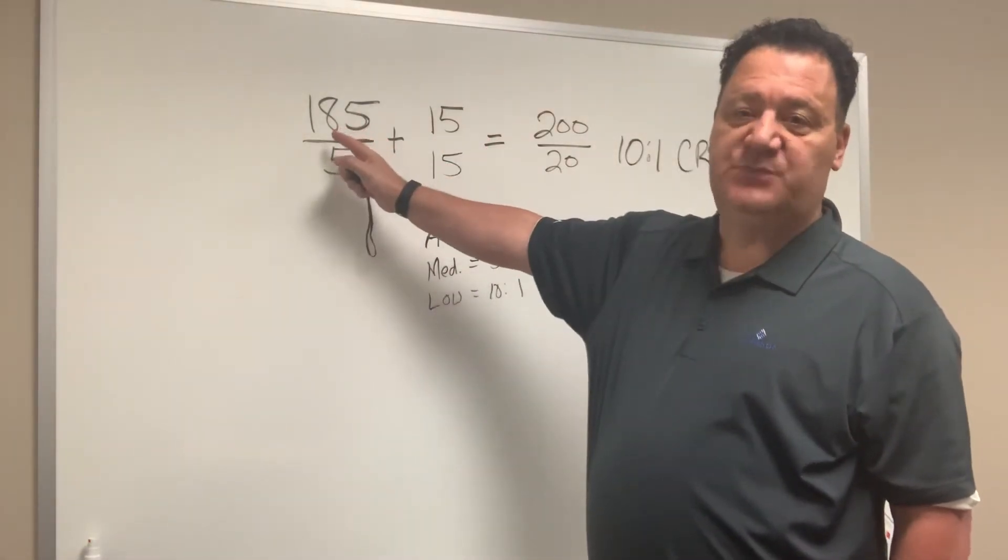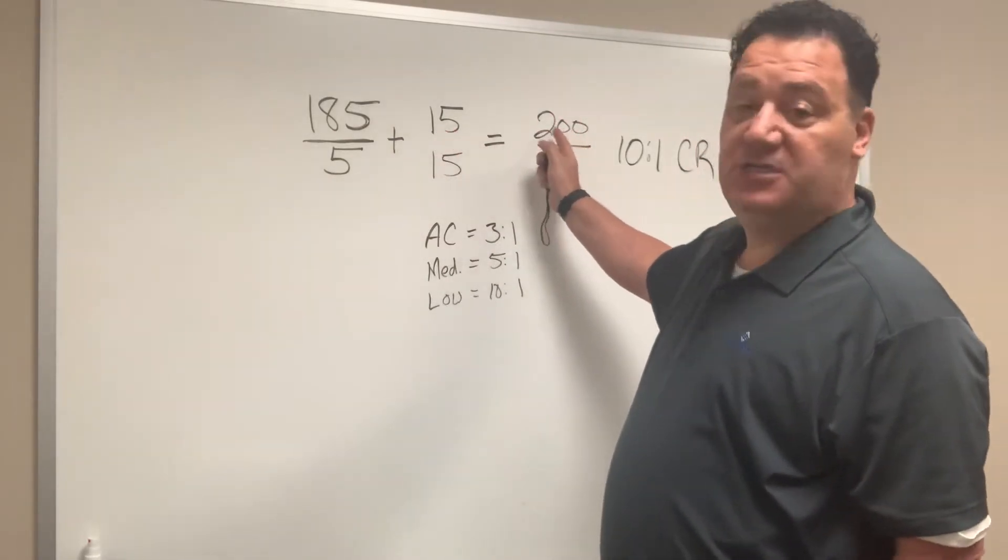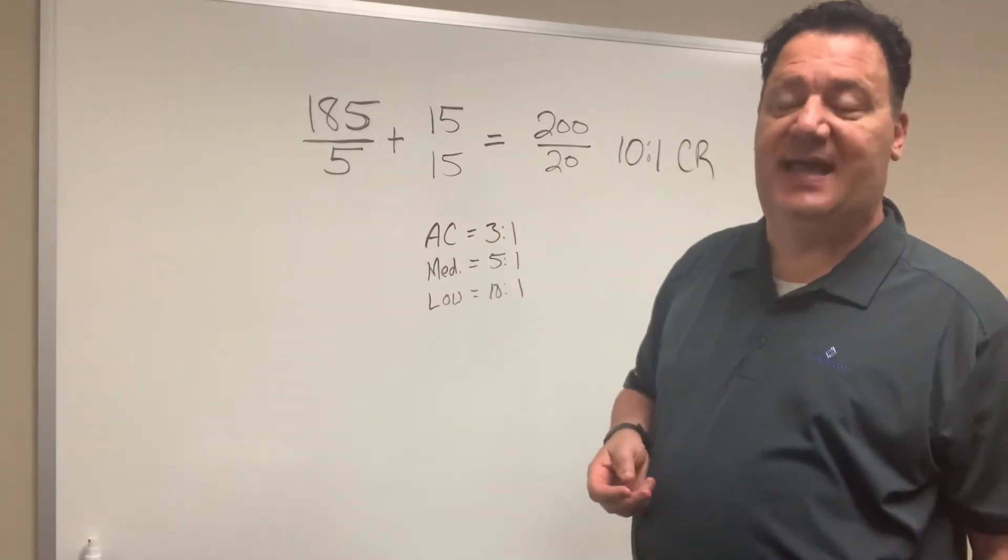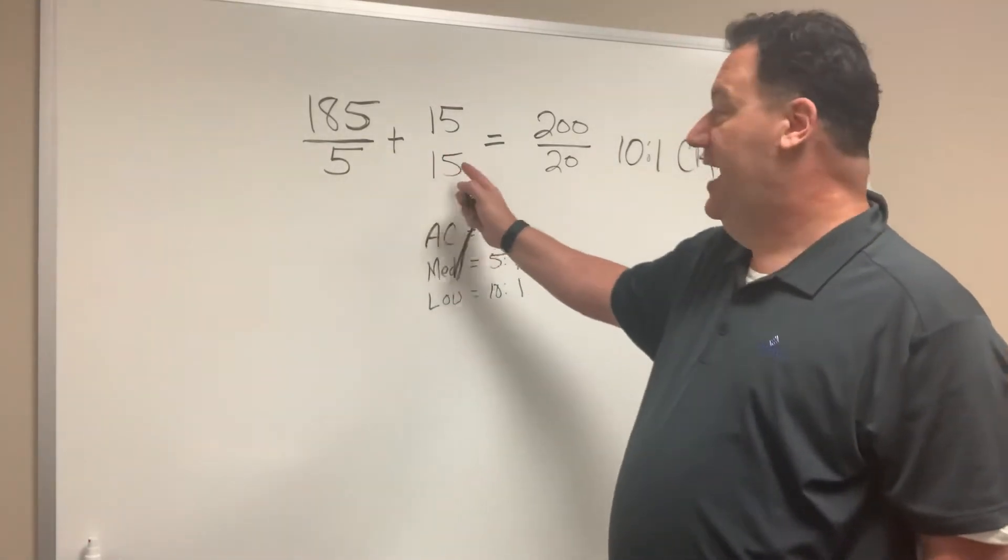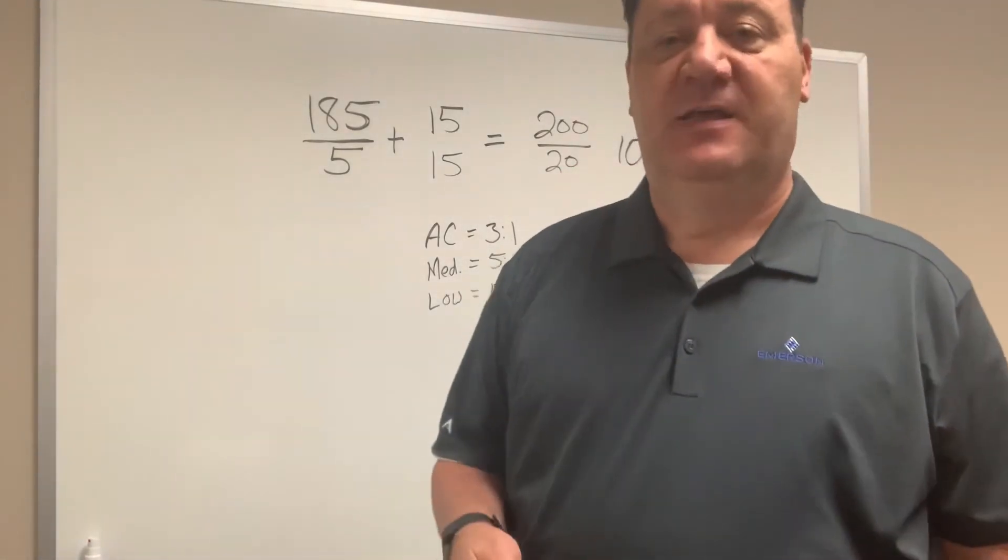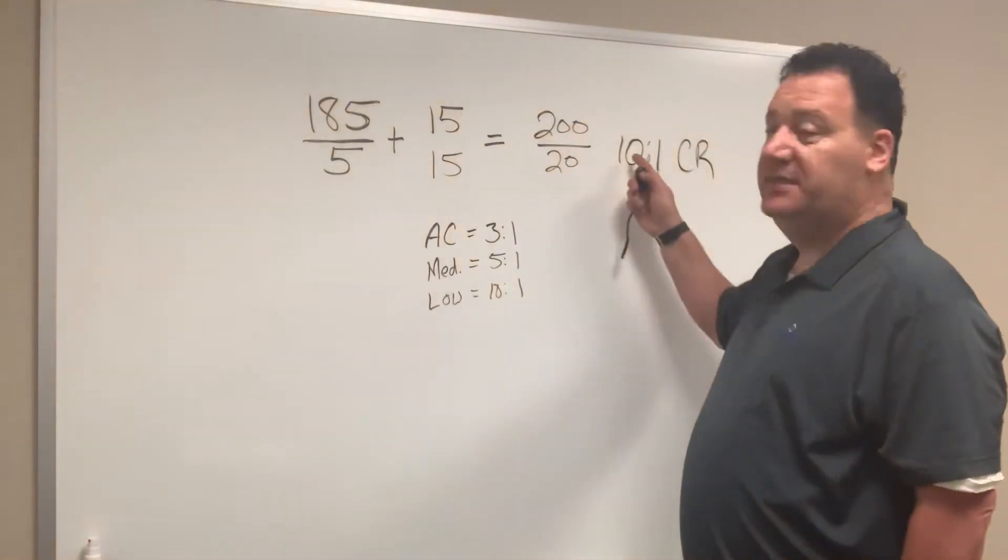So I take my gauge pressure, add it to my atmospheric pressure. My head pressure then becomes 200 PSIA, 200 PSIA absolute. Suction pressure 5, add my atmospheric pressure, equals 20. That is 200 over 20. 20 divided into 200 is 10.